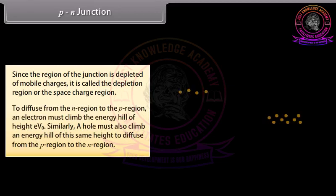To diffuse from the N-region to the P-region, an electron must climb the energy hill of height eV₀. A hole must also climb an energy hill of the same height to diffuse from the P-region to the N-region.